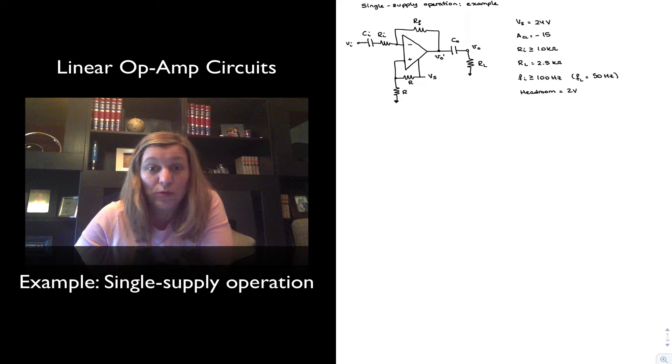We are supposed to design it to be operated from a single supply of 24V. We want a closed-loop gain of negative 15. Our input resistance must be greater than or equal to 10 kΩ. It is supposed to operate a load of 2.5 kΩ.